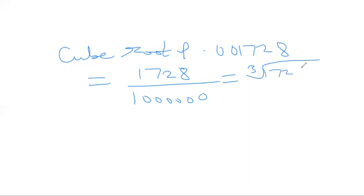Cube root of 1728 and what will be cube root of 1000000, which is 100. Now let us find cube root of 1728 and here we have already got 100 as cube root of this. So you can simplify it.